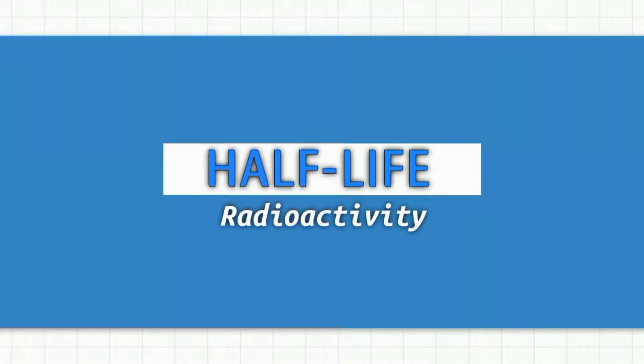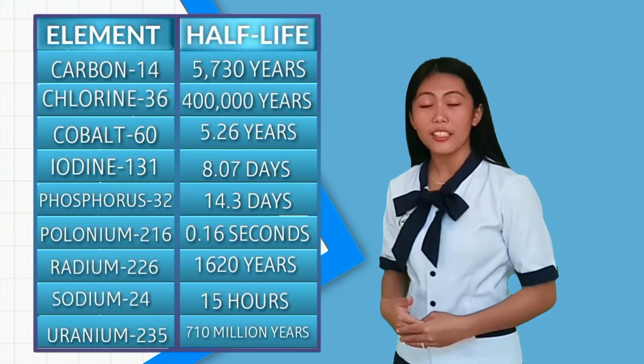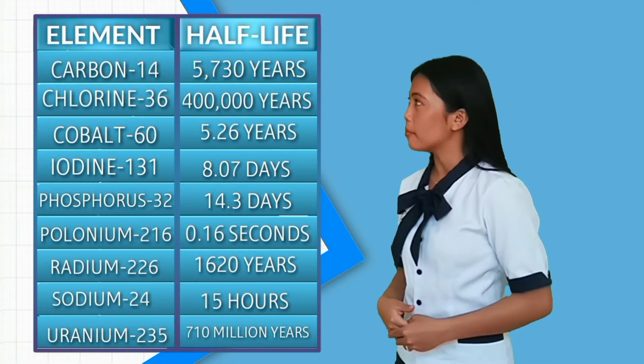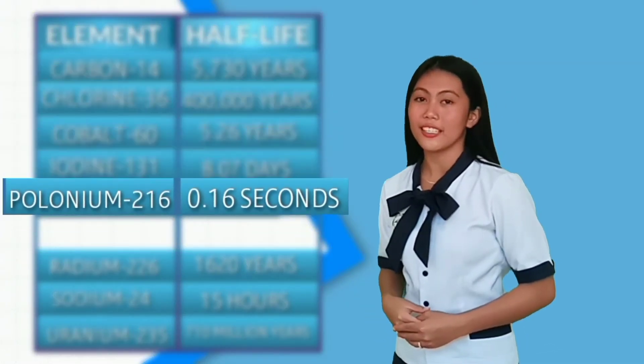Half-life in radioactivity refers to the interval of time required for one-half of the atomic nuclei of a radioactive sample to decay. Half-life is different for each isotope. Data shows half-life can range from less than a second to millions of years. The isotope in this table that decays most rapidly is polonium-216.